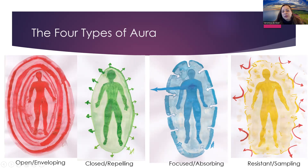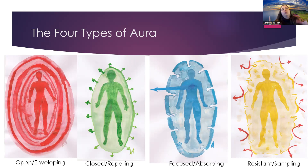The Manifestor is the next type. They have a closed and repelling aura. They are built to initiate, built to manifest, built to pierce through new territory — to be the spark, to ignite fires, to push through. They are built energetically for that. Their aura is repelling, pushing other auras away. We can imagine it like a bowling ball which just pushes everything away from its path.